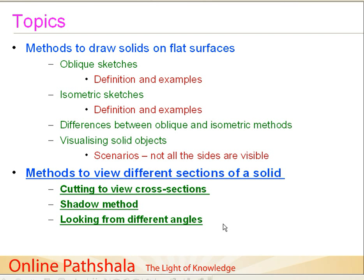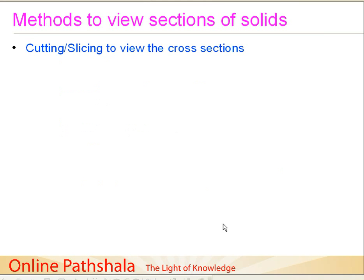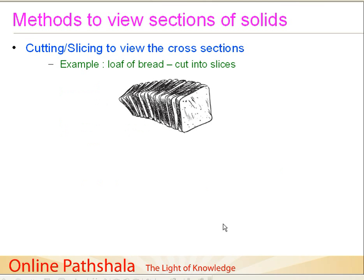Let's get started on our methods to view the different sections of a solid. The first method is quite obvious — you can just cut or slice a particular solid and view its cross-section. The most common example is a loaf of bread which is cut into slices. If you have an uncut loaf of bread, you just see a cuboid structure, but when the bread is cut, you can see the various sections.